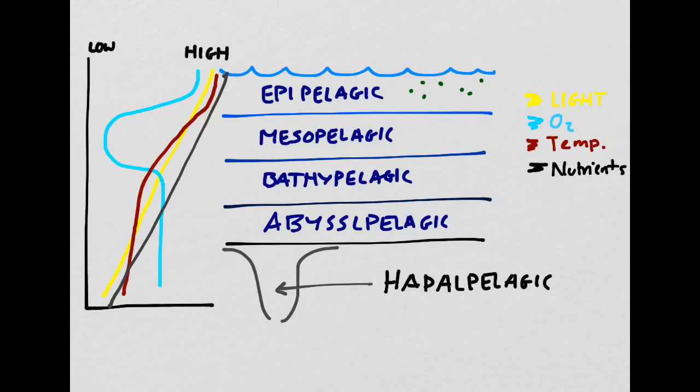As you can see, it would be extremely challenging to live in the abyssopelagic or hadopelagic zones because of the lack of light, lack of oxygen, lower temperatures, and lack of nutrients. Organisms that manage to live here must have very specific adaptations that allow them to survive.